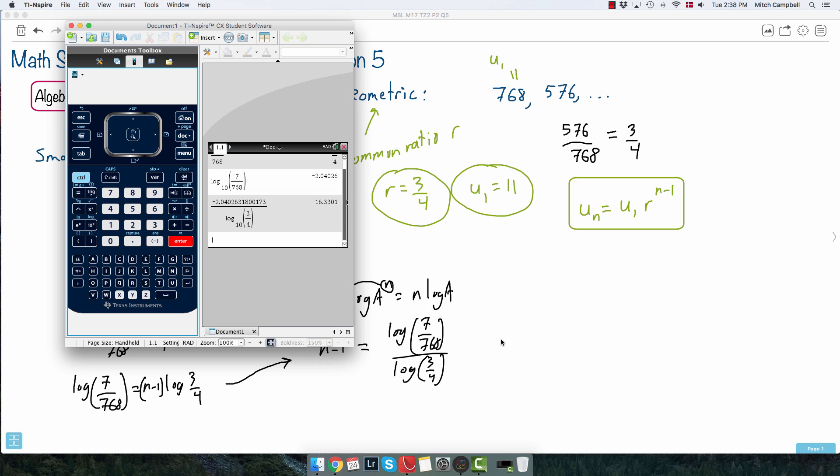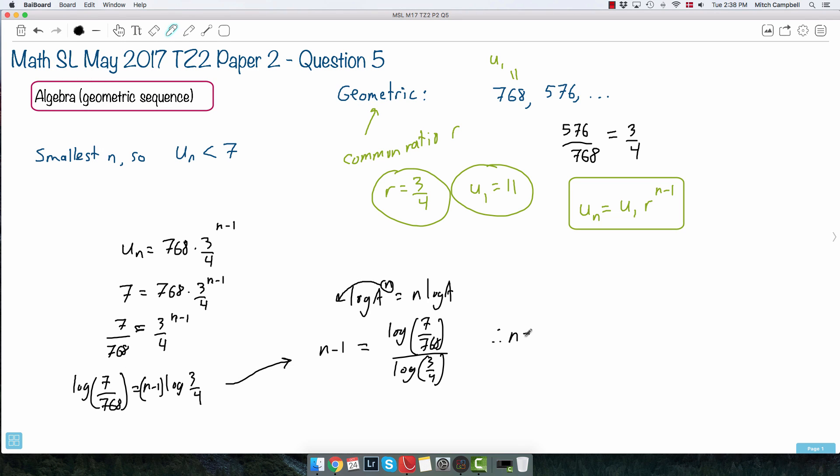I get an answer of 16.3301. So, now that I know that that's n minus 1, therefore, I have n equals, well, because you could say that equals 16.3301. That was n minus 1. If I want just n, then I've got to add 1 to it. So, I've got 17.3301. The question is, then, what does this mean? Do I say that the value, because, by the way, I'm trying to find the smallest n, so un is less than 7. So, the question is here, do I round this up to 18? So, do I say n equals 18? Or do I say n equals 17? Which should I do? I think that's maybe a good question to ask. So, let's maybe try these out. Let's maybe do n equals 17.